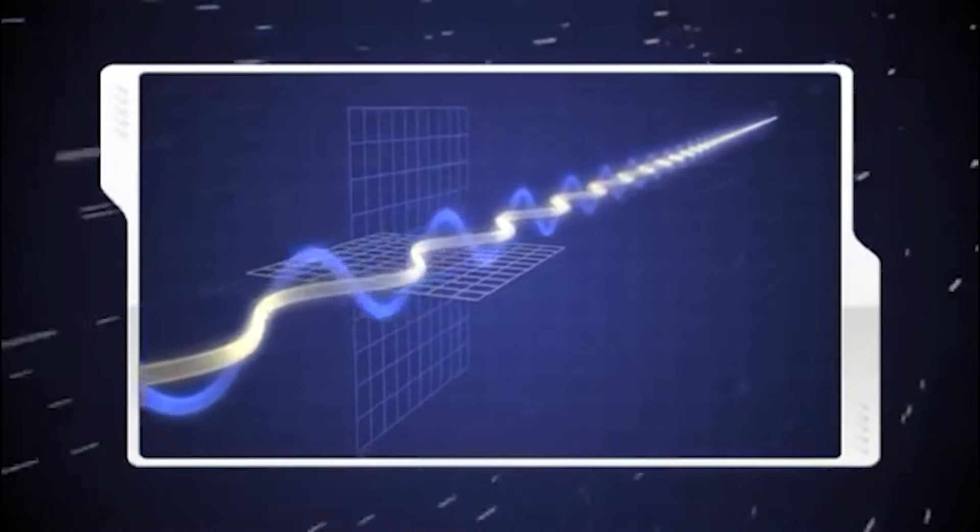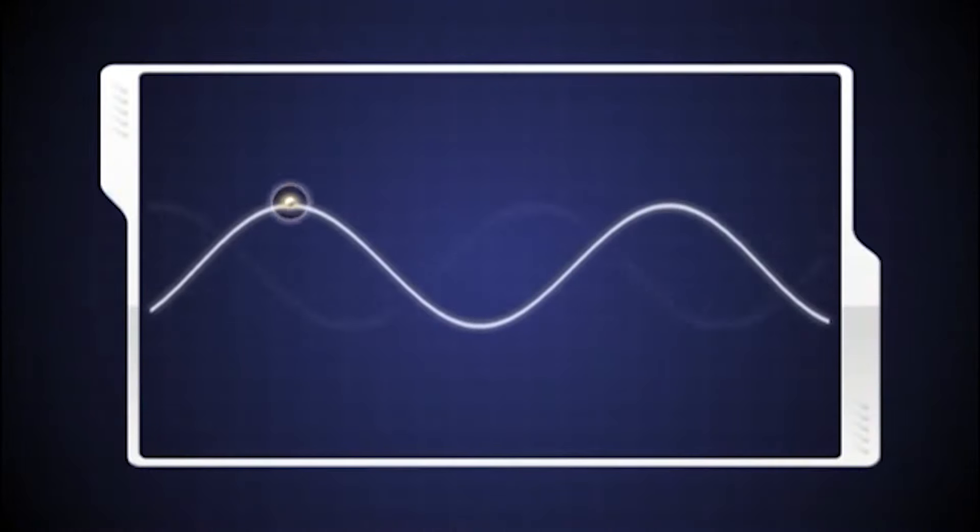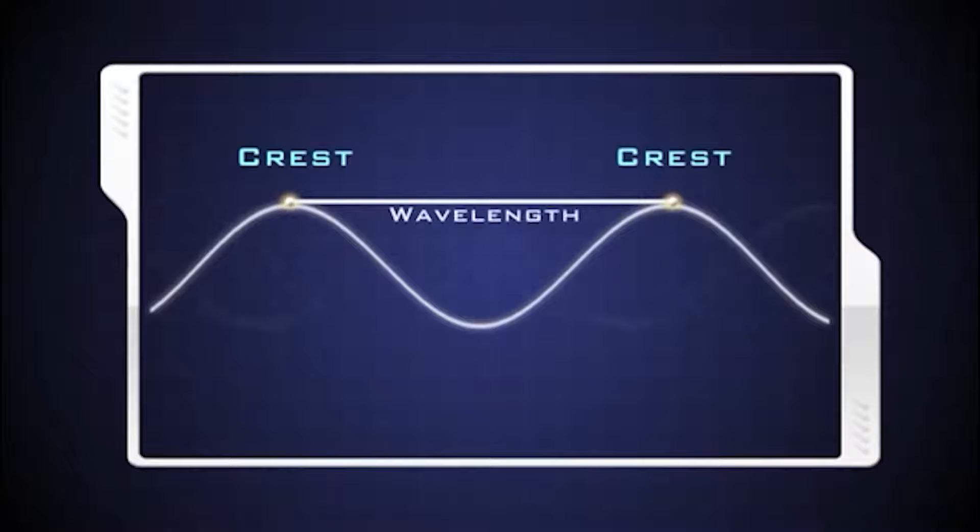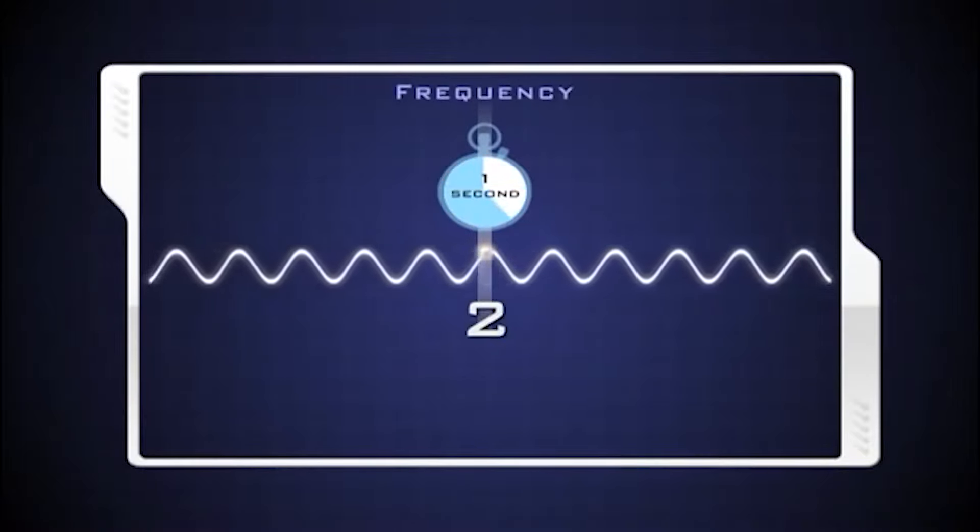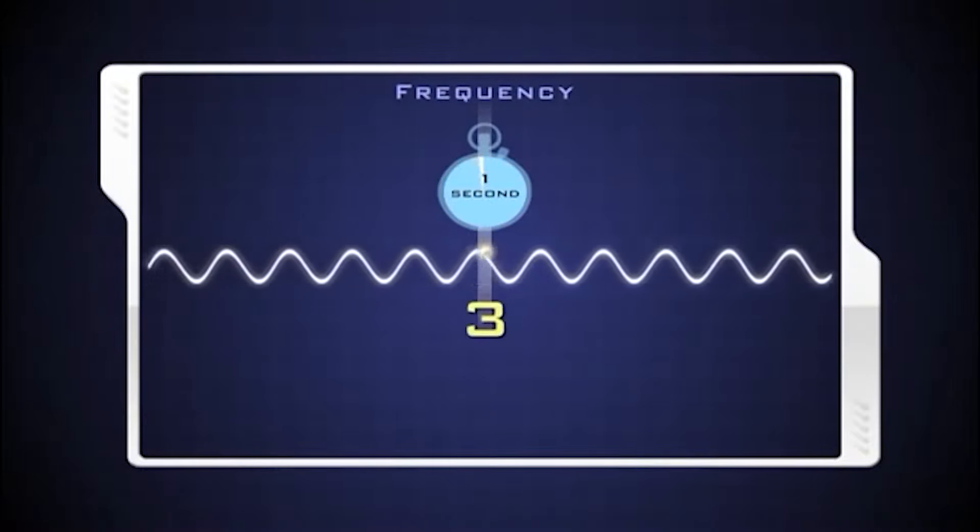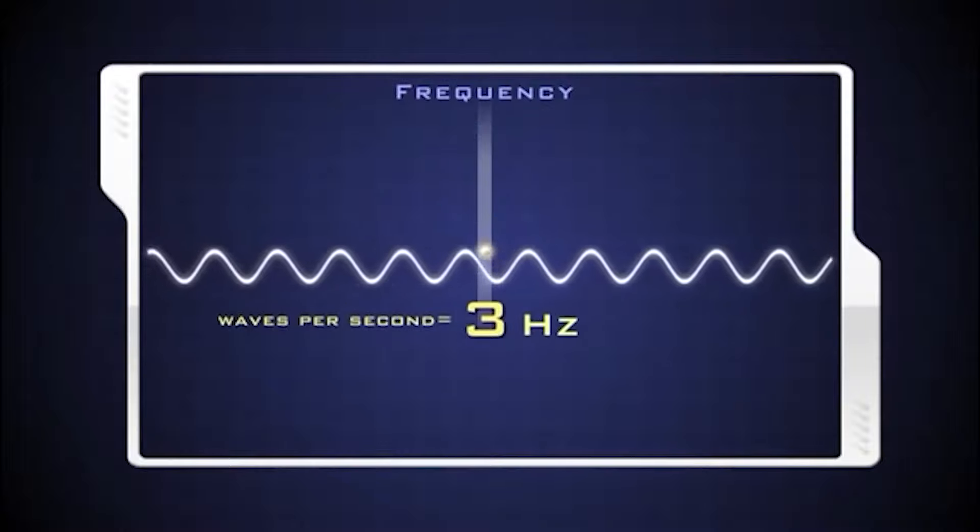The wavelength of an electromagnetic wave can be determined by measuring between two adjacent peaks or any two equivalent points on the wave. Frequency is a measure of wavelength cycles per second. For example, a wave pulsing three times per second has a frequency of three hertz.